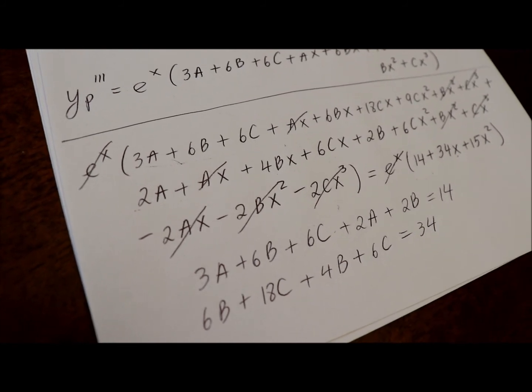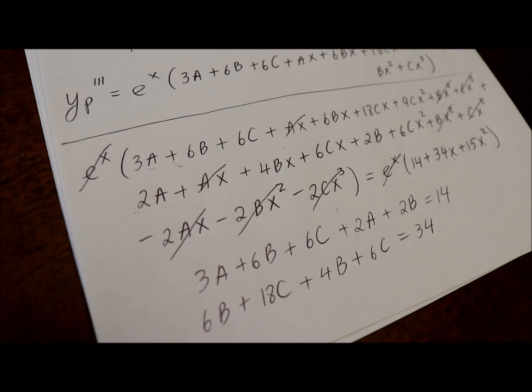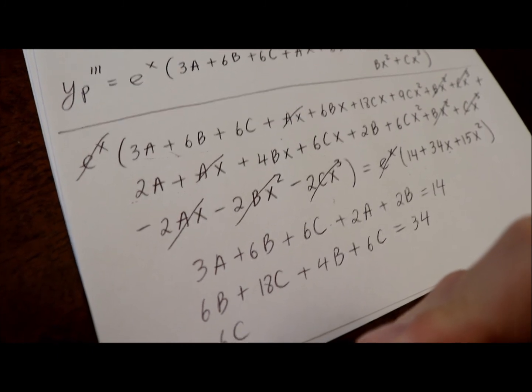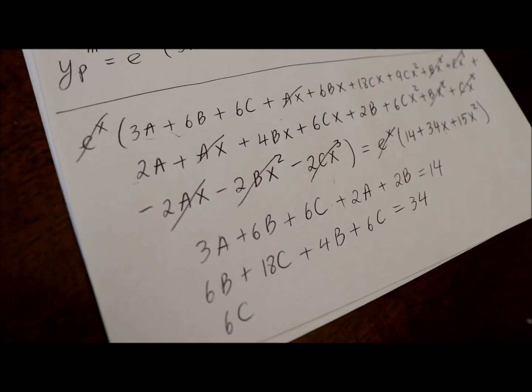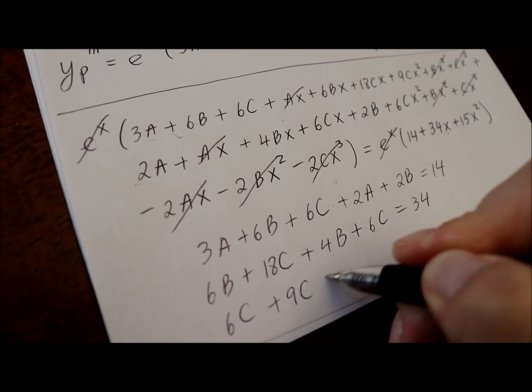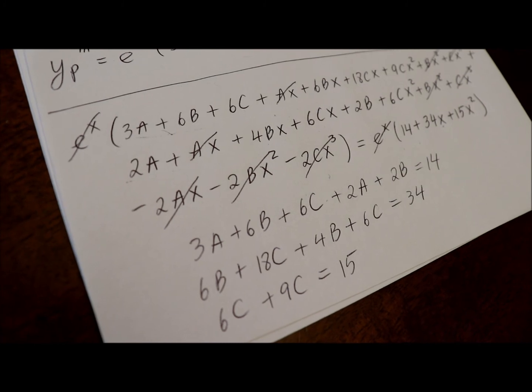And the very last coefficients in front of x squared. 6c squared, I'm sorry, 6c plus 9c equals 15. So, what we get here is a system of equations.